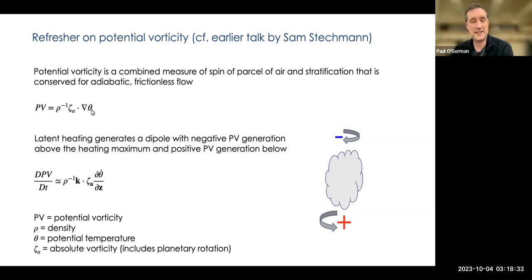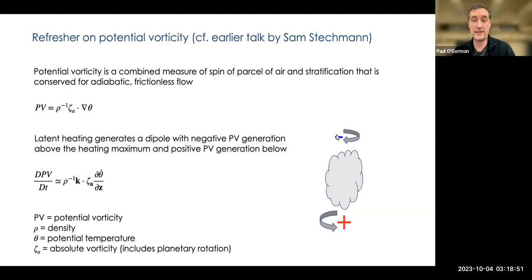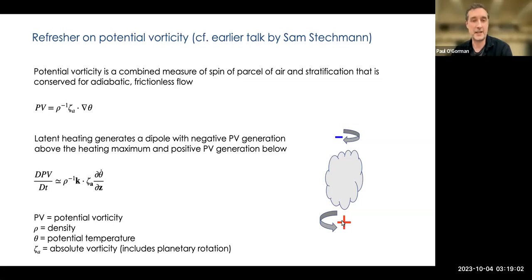How does latent heating affect potential vorticity? The formula shows it's proportional to the absolute vorticity and also involves a vertical gradient of theta-dot — this is approximate but is the dominant term. So if we have some latent heating represented by a cloud, we'll tend to generate negative PV higher up above the maximum of the heating and positive PV below. This is a really key factor for considering how latent heating affects extratropical storms.